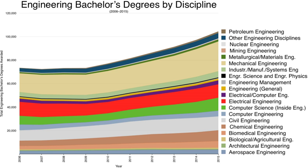Engineering training in Kenya is typically provided by the universities. Registration of engineers is governed by the Engineers Registration Act. A candidate qualifies as a registered engineer (R.Eng.) if he or she holds a minimum four-year post-secondary engineering education and a minimum of three years of post-graduate work experience. All registrations are undertaken by the Engineers Registration Board, a statutory body established through an Act of the Kenyan Parliament in 1969.